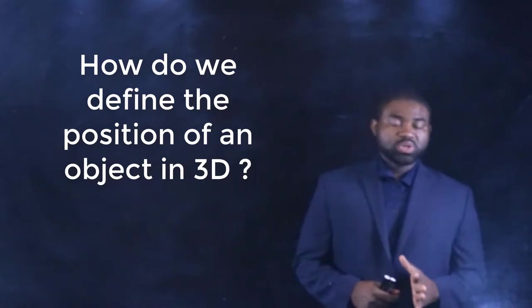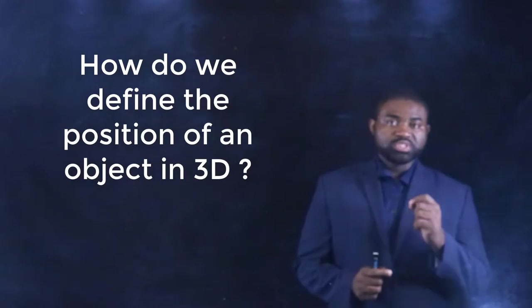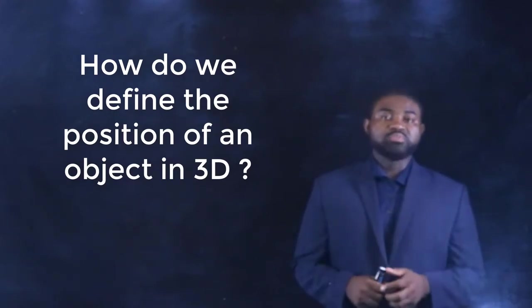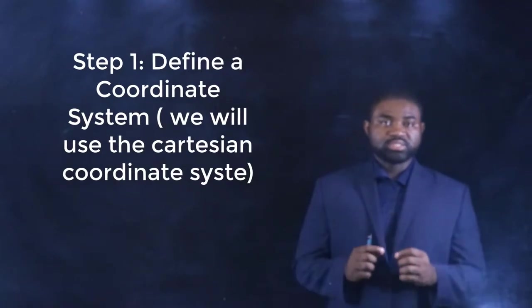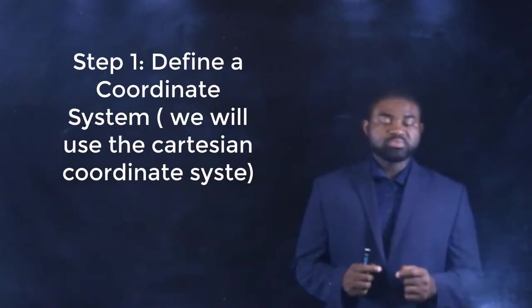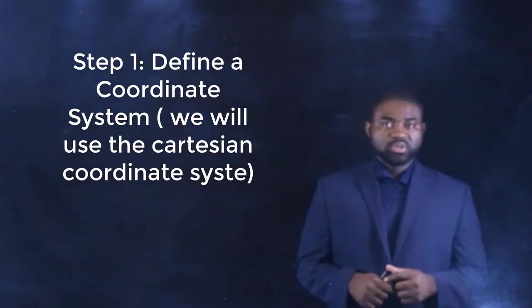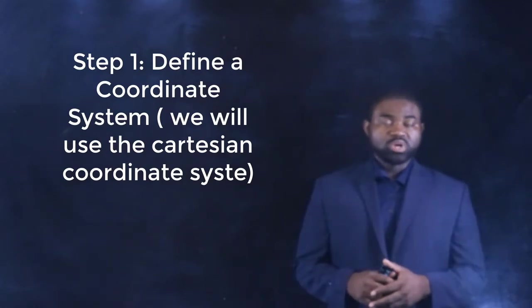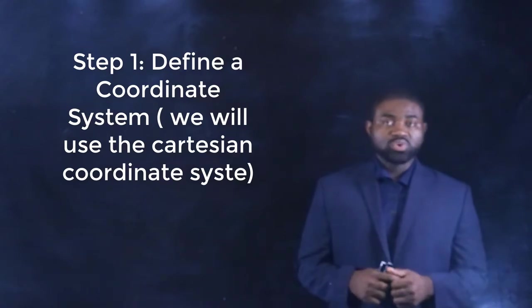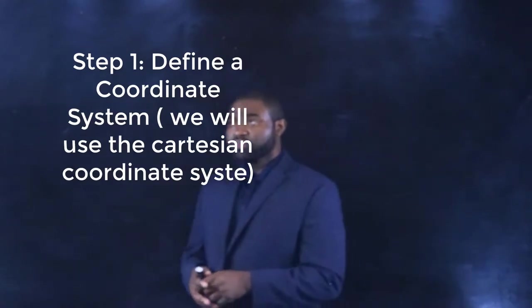Just like you saw in the last module, in order for us to define the position of an object, we need to define a coordinate system. While there are several types of coordinate systems, in this particular module, we are going to zoom in on one: the Cartesian coordinate system.